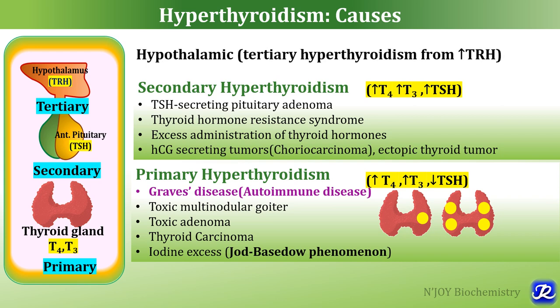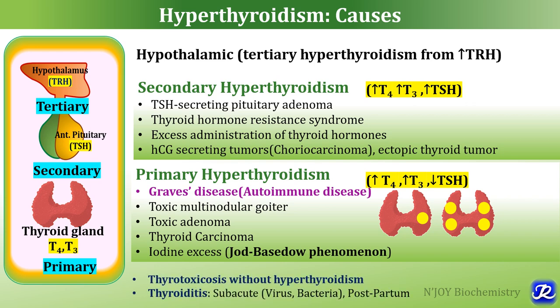Tertiary hyperthyroidism is hypothalamic in origin and results from increased TRH leading to increased TSH level. Thyrotoxicosis can also result without hyperthyroidism, and the causes include subacute thyroiditis caused by virus or bacteria, or postpartum thyroiditis.